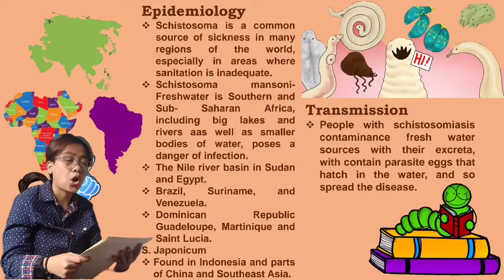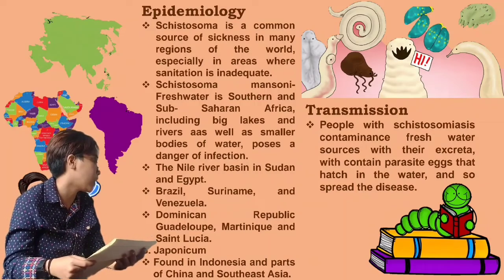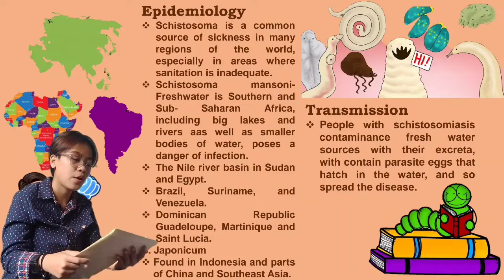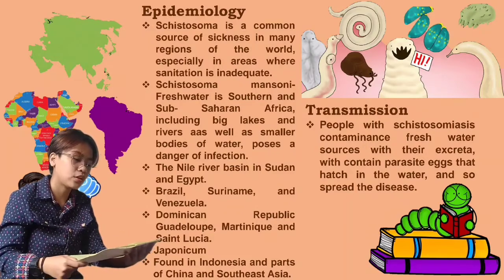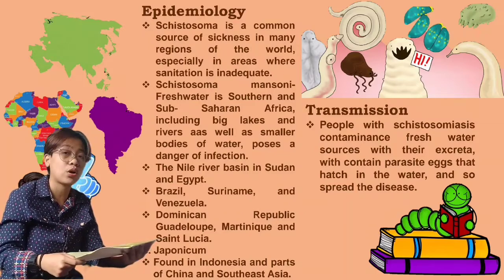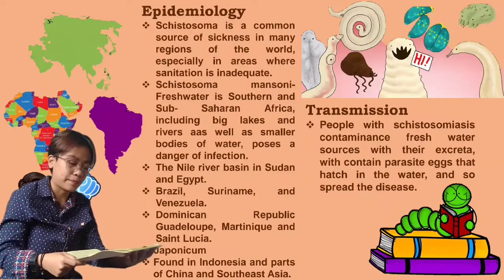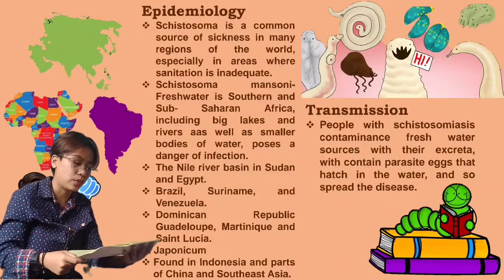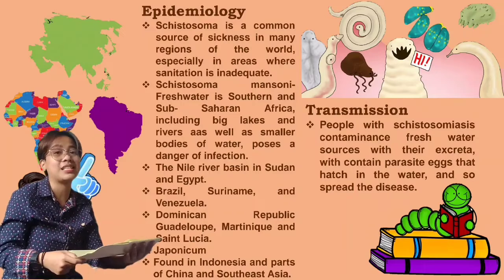For the epidemiology, Schistosomiasis is a common source of sickness in many regions of the world, especially in areas where sanitation is inadequate. Areas where human schistosomiasis is found include fresh water in southern sub-Saharan Africa, including big lakes and rivers as well as smaller bodies of water, which pose a danger of infection. The Nile River basin in Sudan and Egypt is also a transmission zone. Brazil, Suriname, and Venezuela are all located in South America.